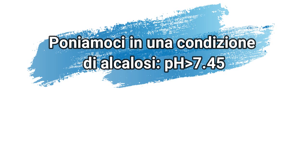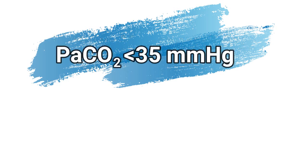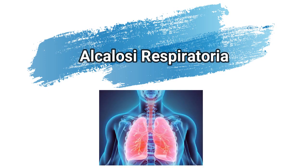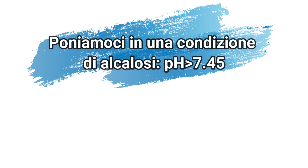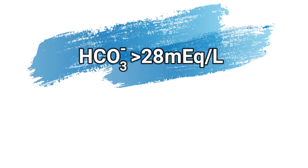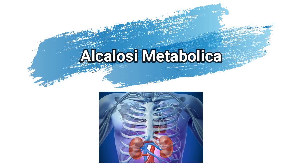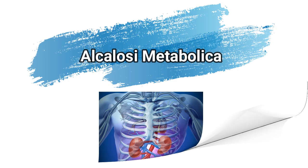Poniamoci ora in una condizione di alcalosi, ovvero con pH maggiore di 7,45. Se la pressione parziale di anidride carbonica è minore rispetto ai valori di riferimento, la persona assistita si trova in una condizione di alcalosi respiratoria. Ciò avviene quando una persona iperventila, espellendo troppa CO2. Se nella stessa condizione i bicarbonati sono maggiori rispetto ai valori di riferimento, la persona assistita si trova in una condizione di alcalosi metabolica, che avviene quando l'organismo aumenta il livello di bicarbonato.